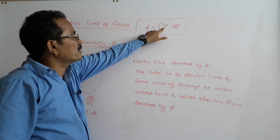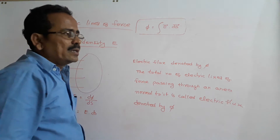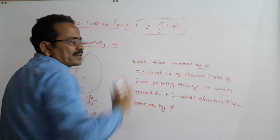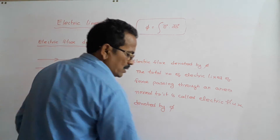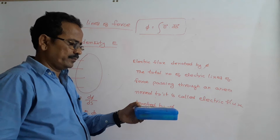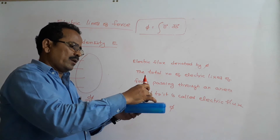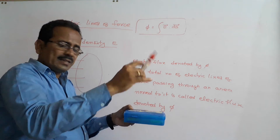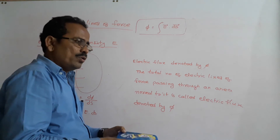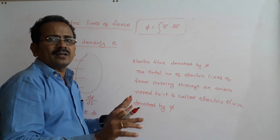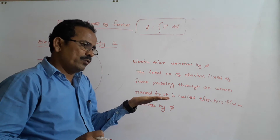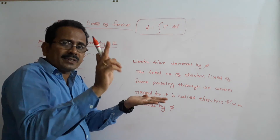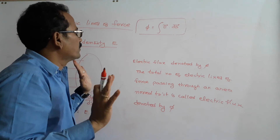What is the direction of E? The tangent to a line of force represents the direction of E. What is the direction of area? Suppose this is an area — draw a normal to this area. That normal represents the direction of the area. So to find the direction of an area, draw a normal to it; that normal represents its direction.